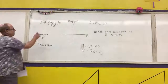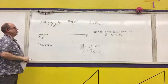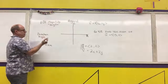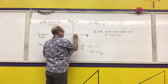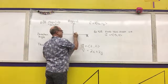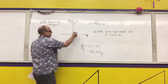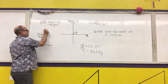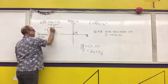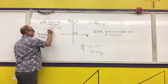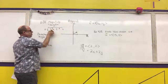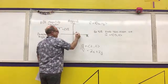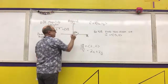The double absolute value bars denote the magnitude or length of the vector. To find it, use the distance formula: the magnitude equals the square root of the sum of the squares of the two components. For the vector ⟨2, 2⟩, the magnitude is √(4 + 4) = √8 = 2√2. Since it's a 45-degree angle, we can verify this with a shortcut.